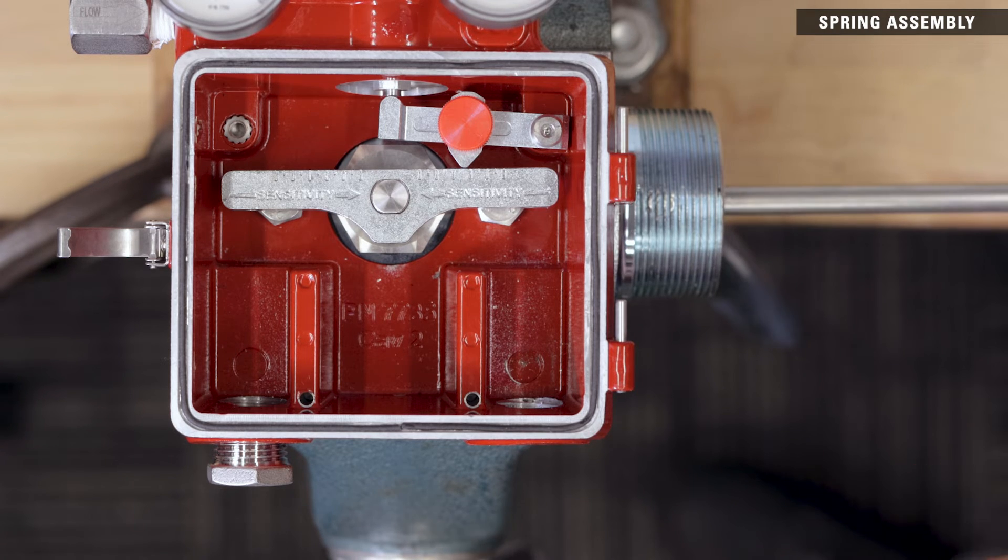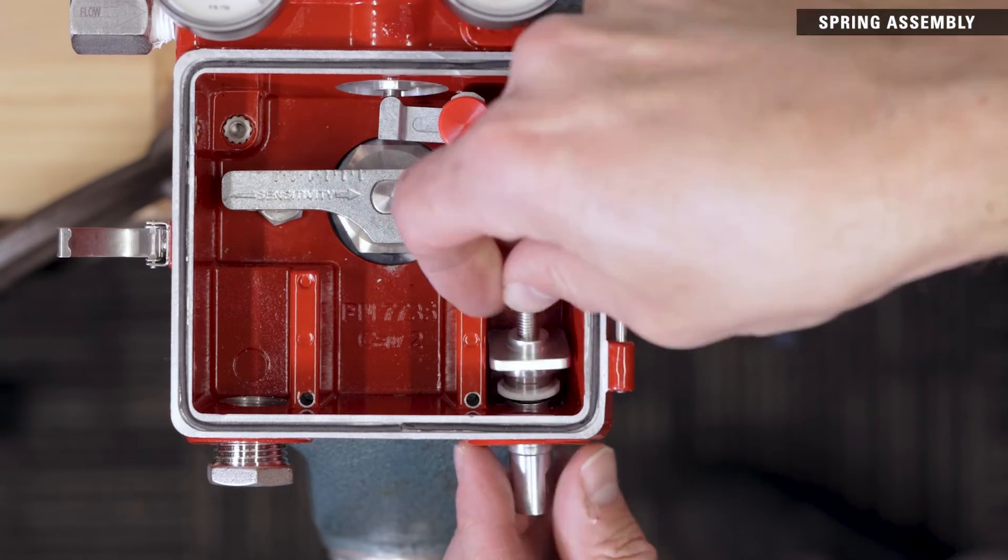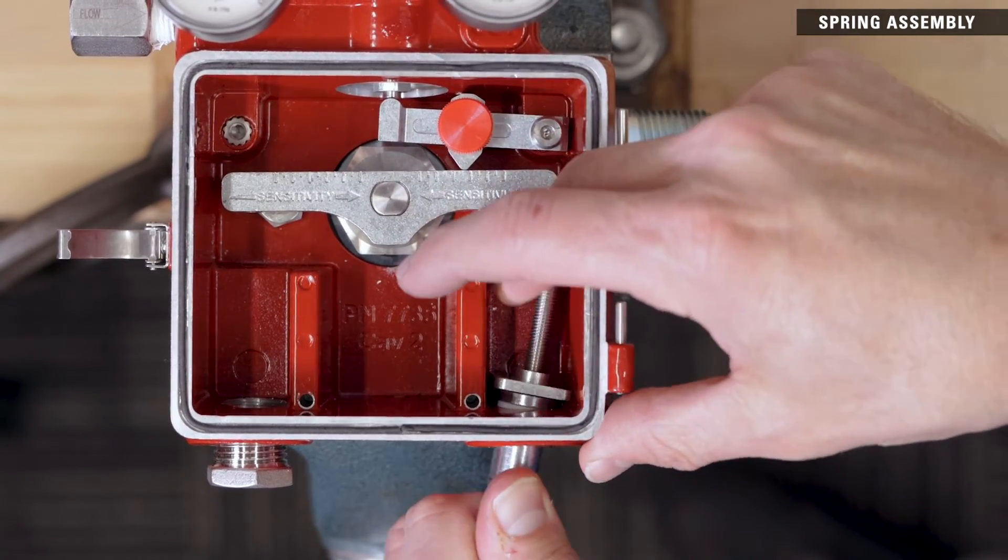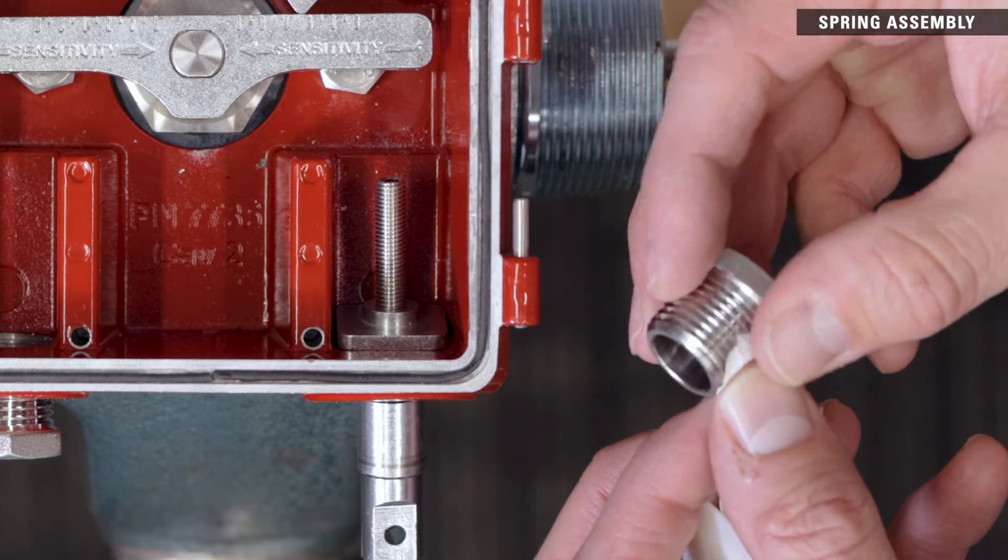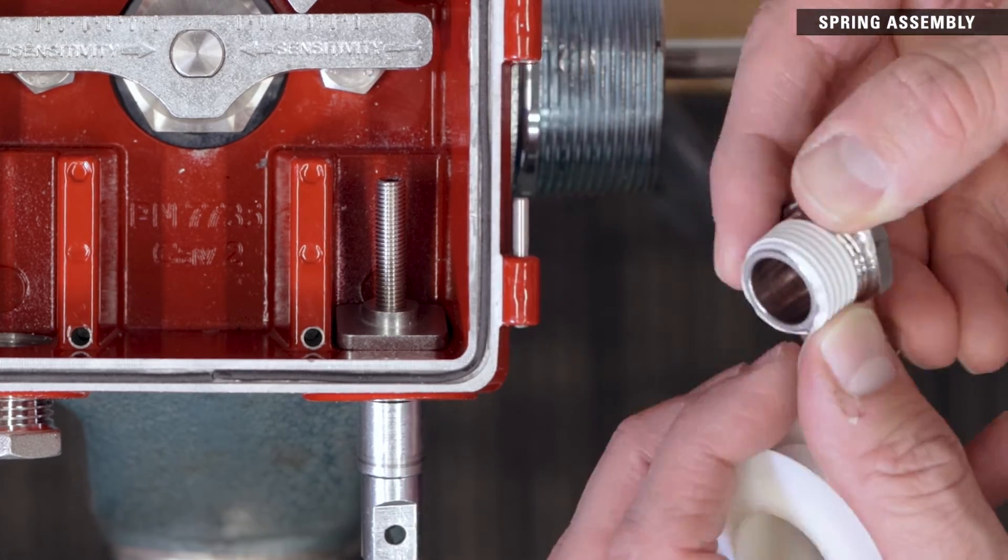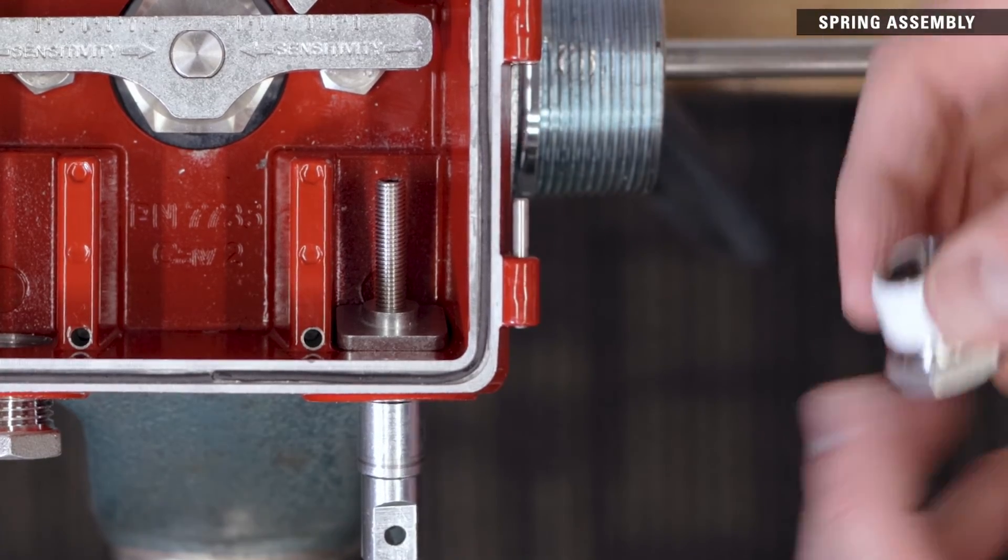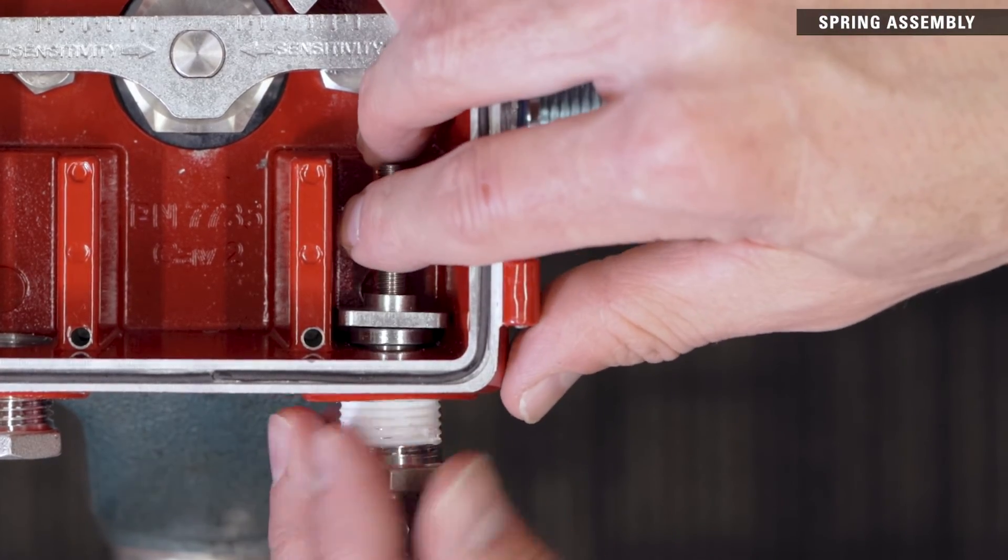Then insert the assembly into the enclosure. Apply thread tape to the half inch NPT spring bushing and thread it into the enclosure by hand.